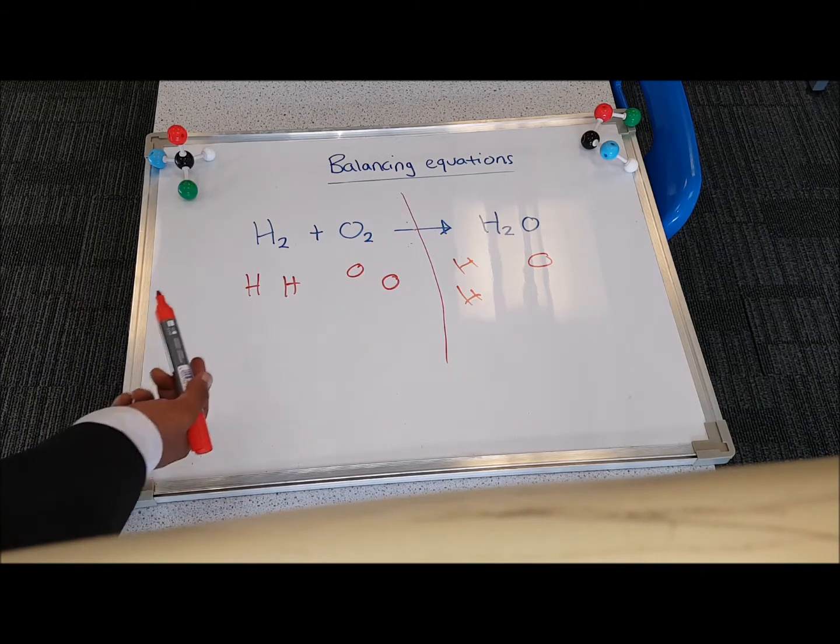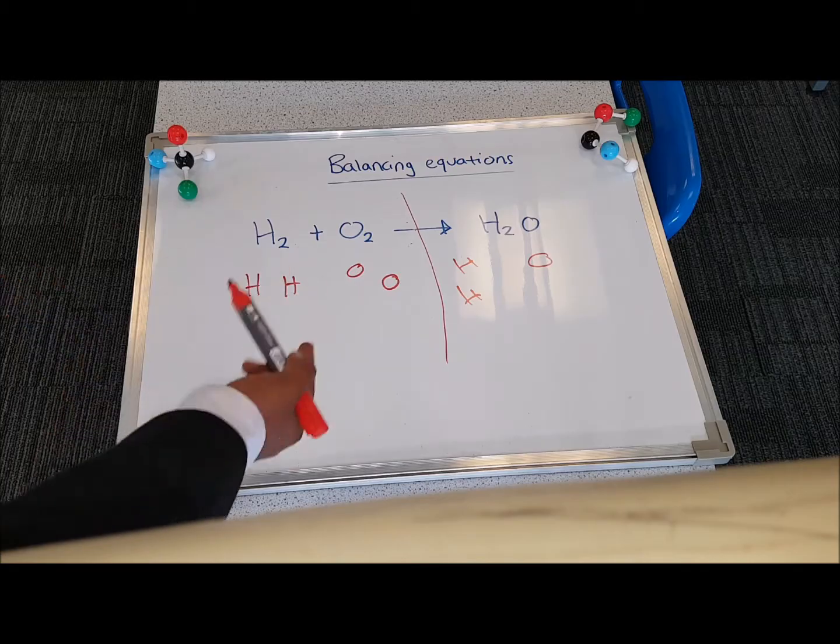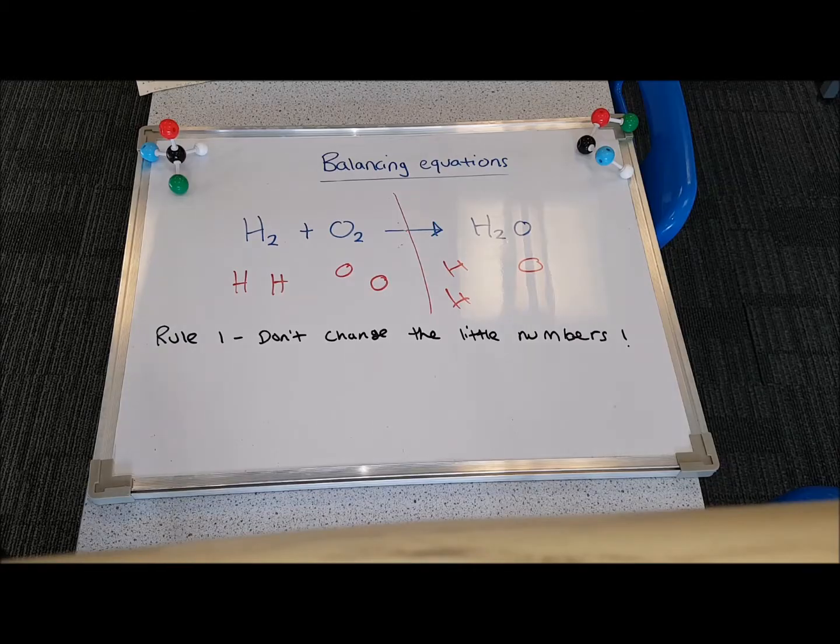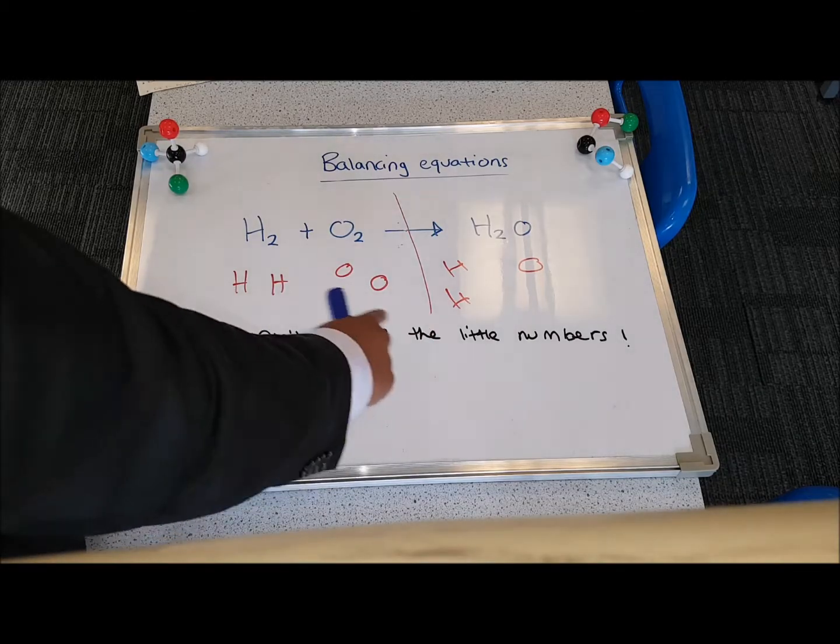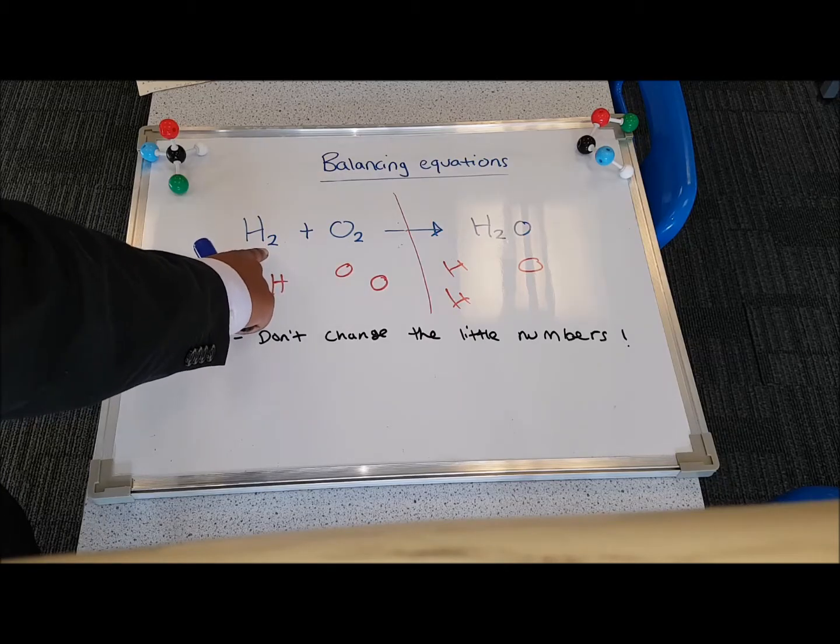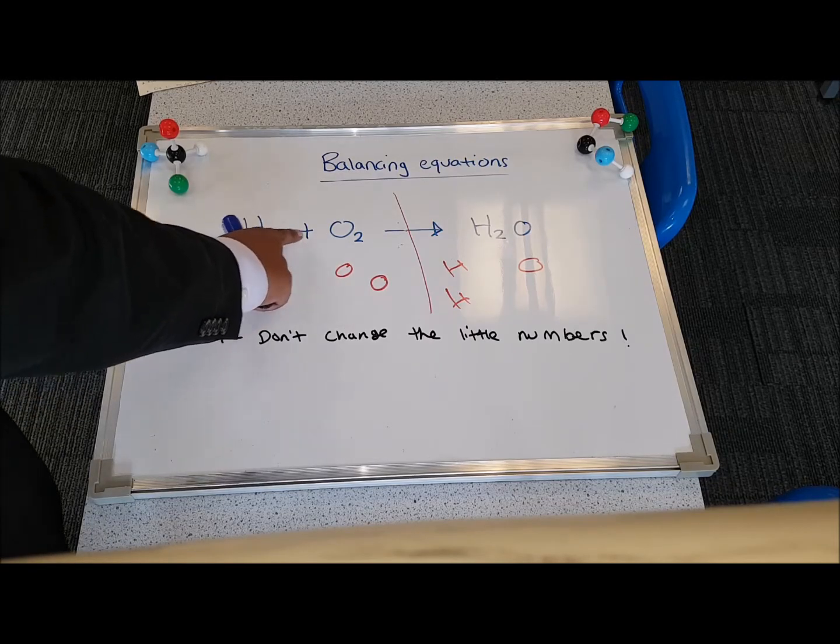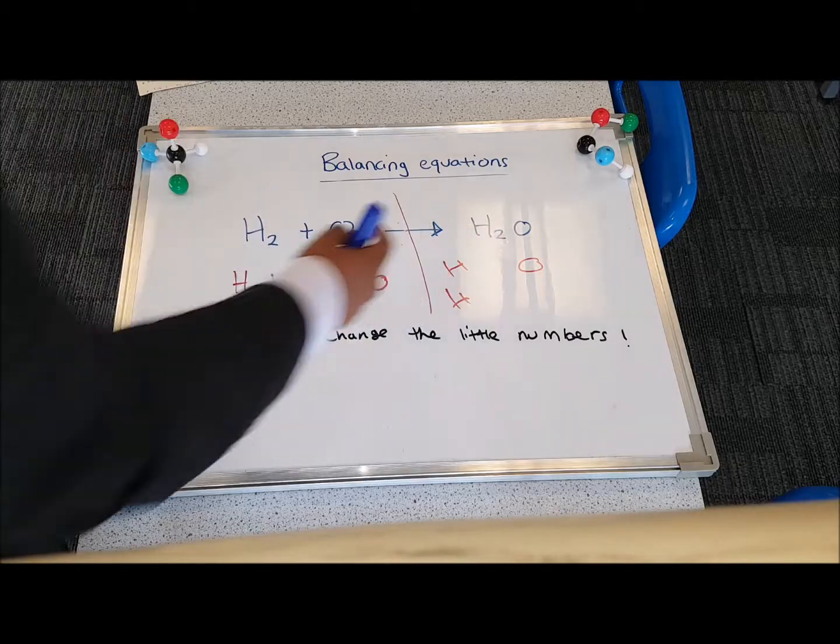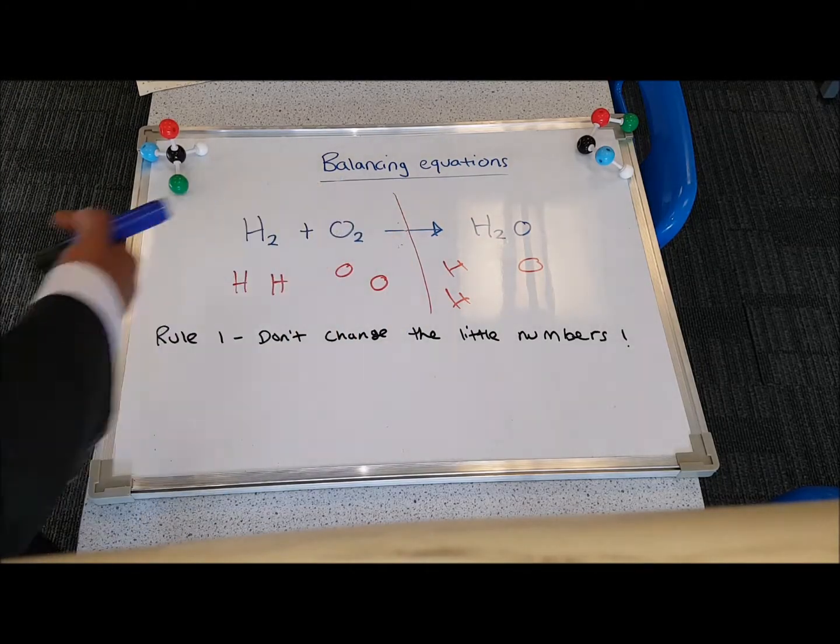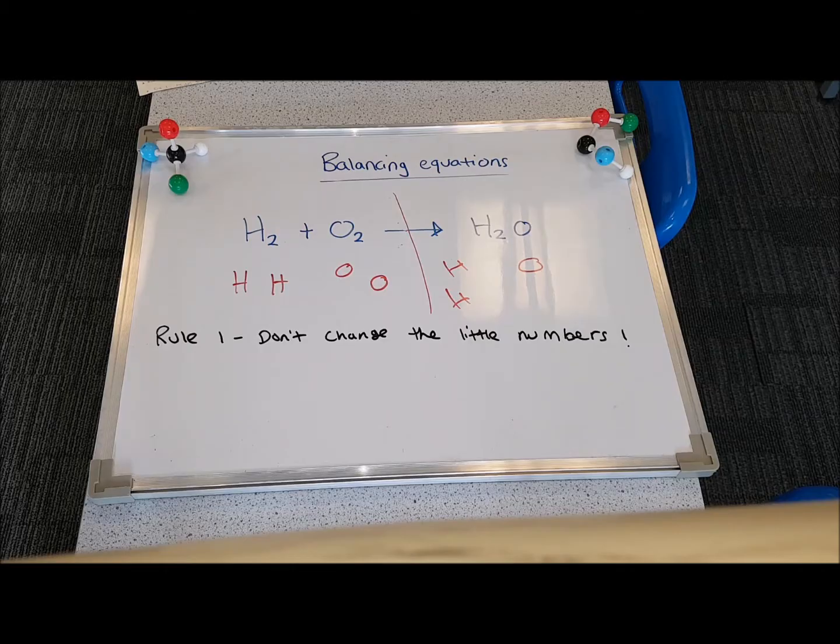There's a couple of rules you have to bear in mind before you start balancing this. Rule number one is you should not change the little numbers. The little numbers are called subscripts. So it's this little two here, for example, that two there, and that two. You cannot change them, and you cannot add them onto existing elements or compounds.